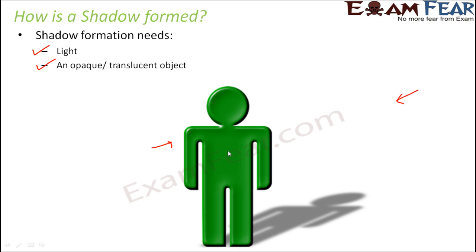So if you have light coming from this direction as well as this direction, no shadow will be formed. Even though an opaque object is present, shadows will not form because there is no area where light is completely blocked. Maybe this area has light blocked by the object, but from the other side light is still able to reach. And if you replace the person with a glass slab, no shadow will be formed because light will pass through it — there will be no dark region behind.